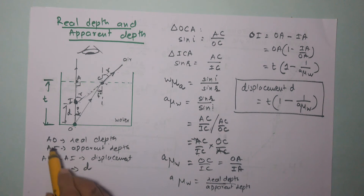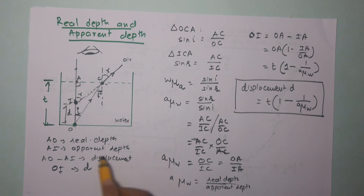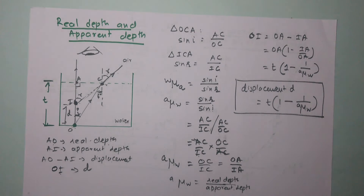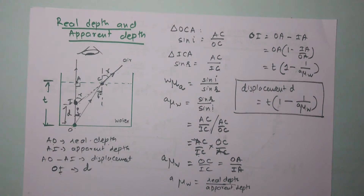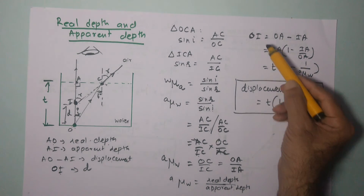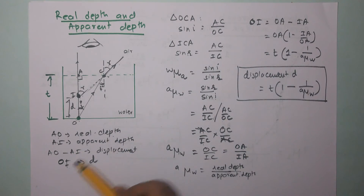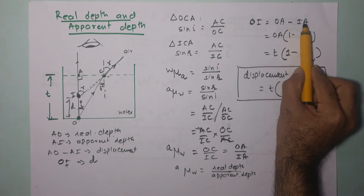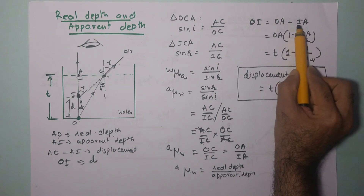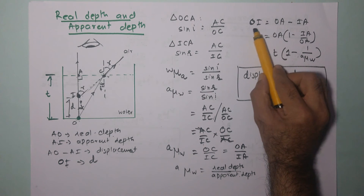OA is the real depth and IA is the apparent depth. So the refractive index equals real depth upon apparent depth. This is how we get the relationship between the refractive index of the medium and real depth and apparent depth. Moving further: OI equals OA minus IA, that is real depth minus apparent depth, and this is the displacement.